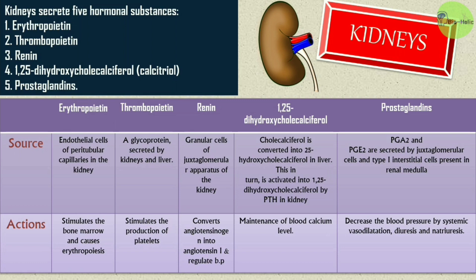Renin is secreted from the granular cells of the juxtaglomerular apparatus of the kidney; it converts angiotensinogen into angiotensin I and thus regulates blood pressure. Fourthly, 1,25-dihydroxycholecalciferol (calcitriol): cholecalciferol is converted into 25-hydroxycholecalciferol in the liver, which is then activated into 1,25-dihydroxycholecalciferol by parathyroid hormone in the kidney, and it is important for maintenance of blood calcium levels. Lastly, prostaglandins PGA2 and PGE2 are secreted by juxtaglomerular cells and type 1 interstitial cells in the renal medulla; they decrease blood pressure by systemic vasodilation, diuresis, and natriuresis.